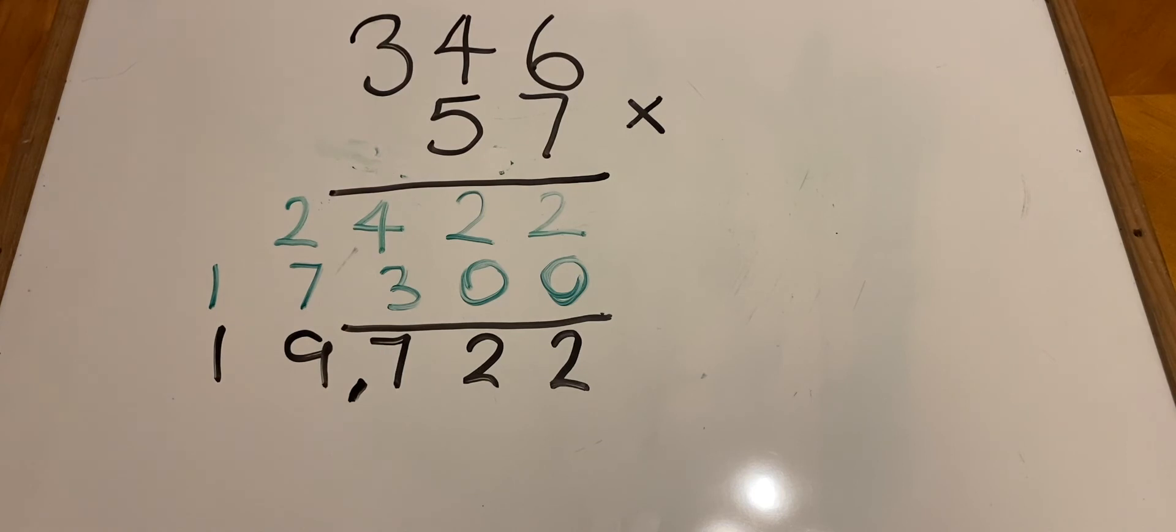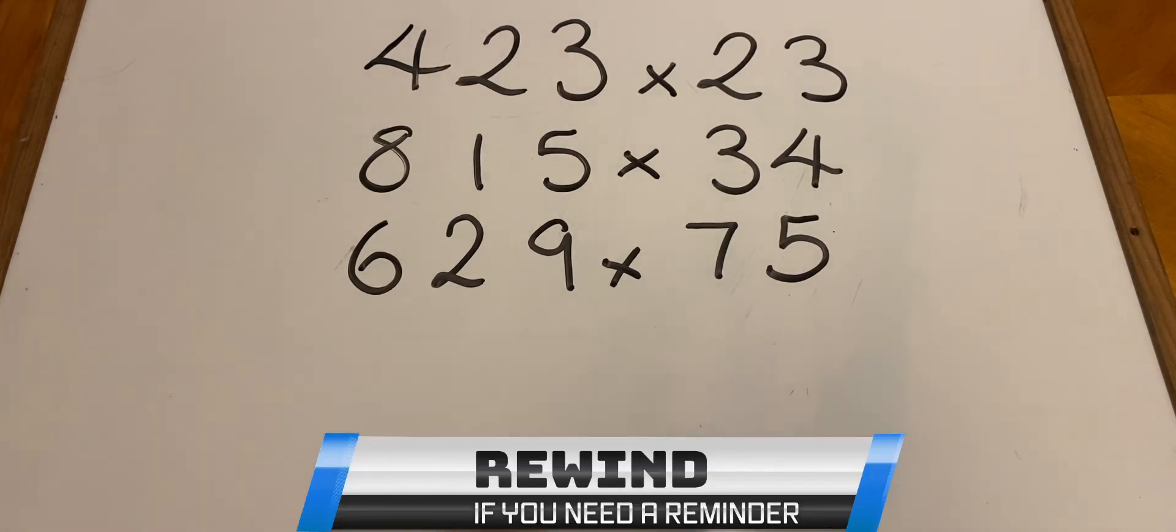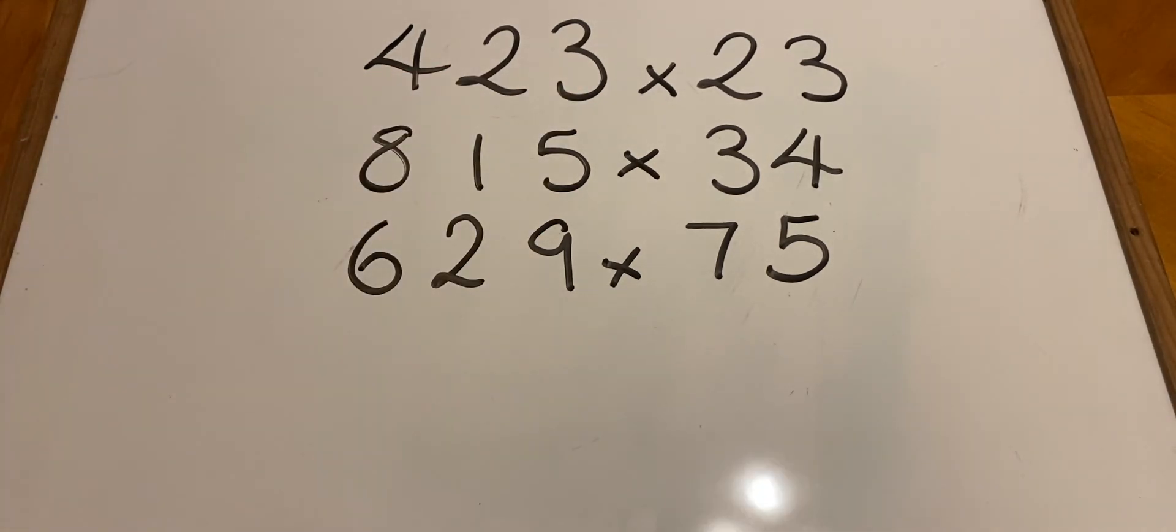Now it's over to you with some examples to have a go at. No pressure, but if you're unsure or you forgot, remember to wind the video back and take a look at the examples we've already worked on. Your questions are: 423 multiplied by 23, 815 multiplied by 34, and 629 multiplied by 75.